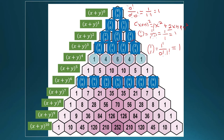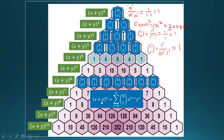If we expand (x + y) raised to six, we get a polynomial of degree six with seven terms. Using sigma notation, we can write it as: summation of (six taken r) times x raised to (six minus r) times y raised to r, where r ranges from zero to six.